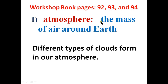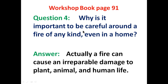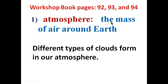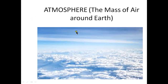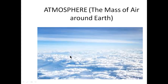Now we are going to do our word meanings and sentences from page number 92 to 94. The first word is 'atmosphere' and the meaning of atmosphere is the mass of air around earth. Here is your sentence: different types of clouds form in our atmosphere. Here is a picture to explain the word — the sky and all the gases surrounding the boundaries of our earth collectively make the atmosphere.